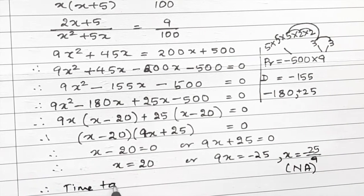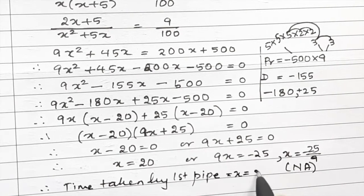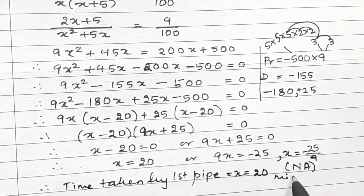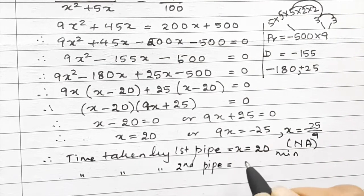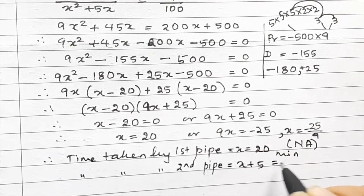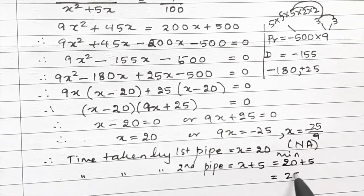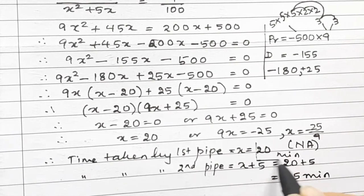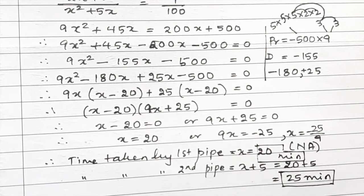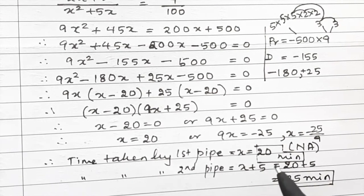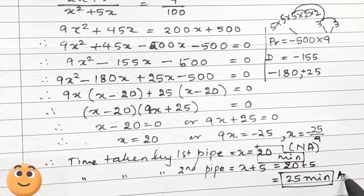Time taken by the first pipe equals x, which is 20 minutes. Time taken by the second pipe is x plus 5, which is 20 plus 5, giving 25 minutes. So the first pipe takes 20 minutes and the second pipe takes 25 minutes — that is our answer.